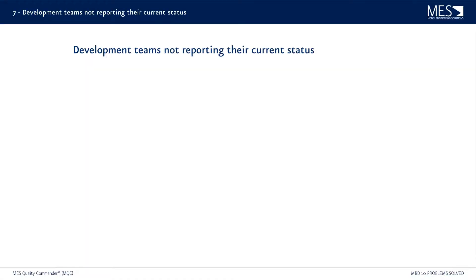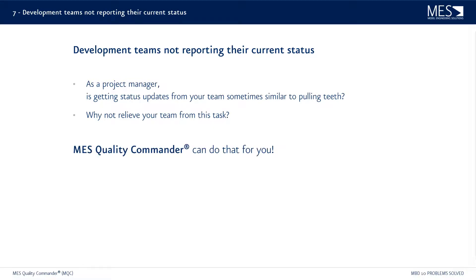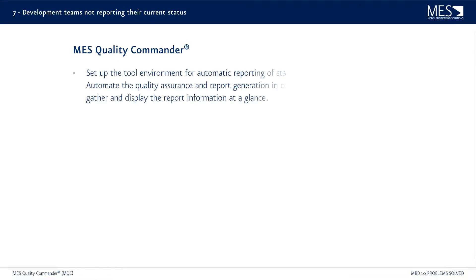Problem number seven: development teams that are not reporting their current status. If you're a project manager, maybe you've already had the experience that getting a status update from your team is similar to pulling teeth. So why not relieve your team from this task and have it done automatically? The MES Quality Commander, or MQC, can do that for you. It can be used to show quality data from report data gathered automatically. You can set up the tool environment for automatic reporting of the status, for example in continuous integration with Jenkins.